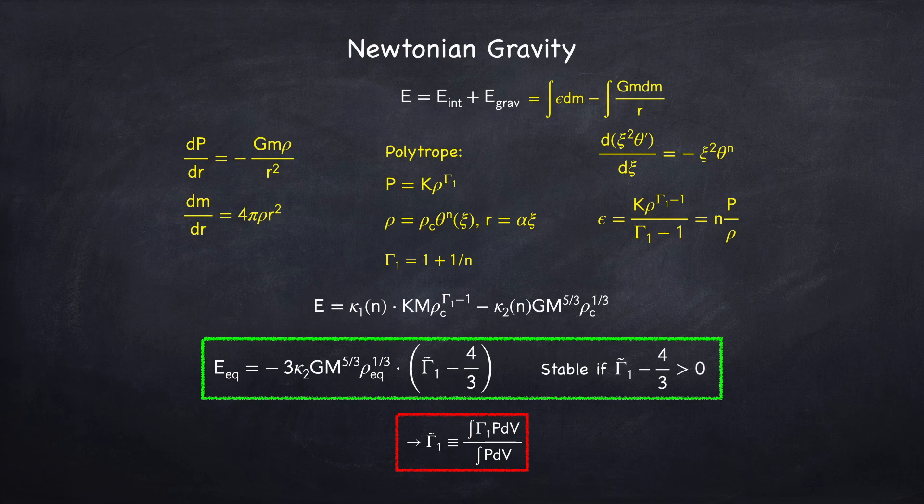There is one exception to this, which is the electron-positron instability, in which some funny things happen with the electrons, and gamma 1 actually drops below 4 thirds. But apart from that, if all you have is Newtonian gravity, stars are always stable.